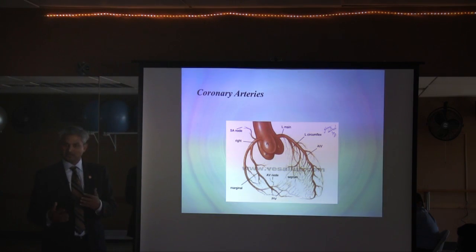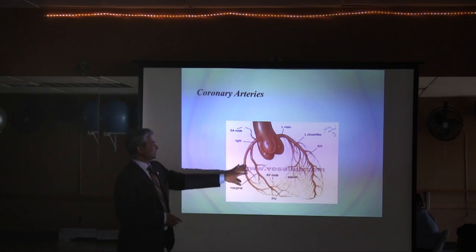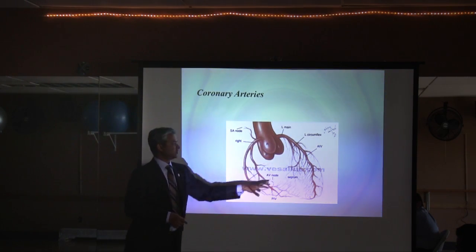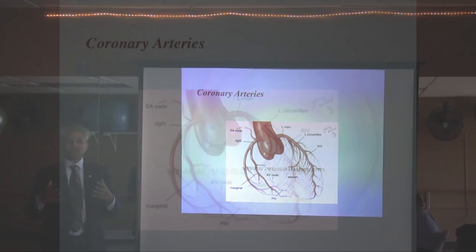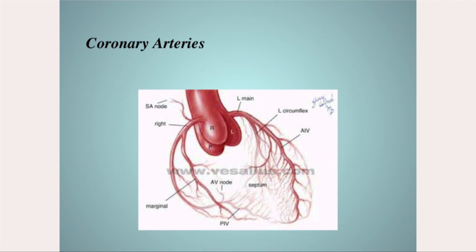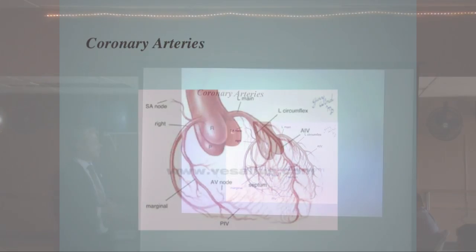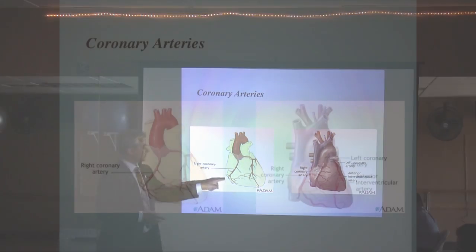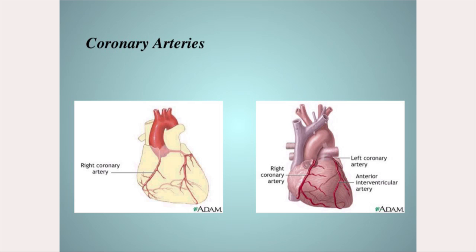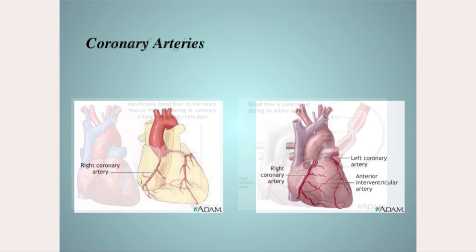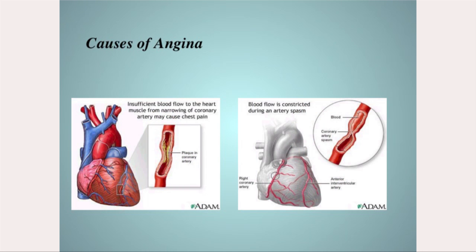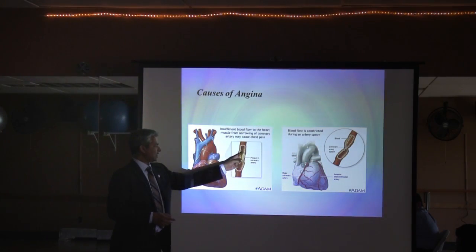Think of the arteries of the heart like an octopus — the head with legs encircling a ball, the ball being the heart muscle. These arteries sit on top of the heart muscle. The most common symptom of heart disease is chest pain or chest discomfort, medically termed angina, which occurs because of either plaque formation or spasm or shrinkage of the heart's arteries.